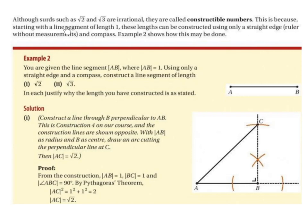Although surds such as root 2 and root 3 are irrational, they are called constructible numbers. This is because, starting with a line segment of length 1, these lengths can be constructed using only a straight edge — a ruler without measurements — and a compass. Example 2 shows how this may be done.